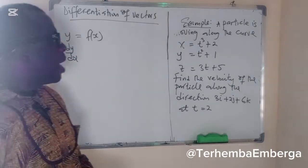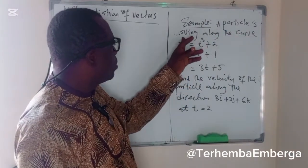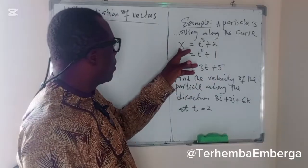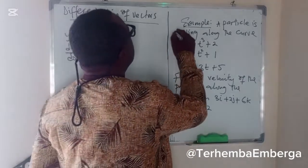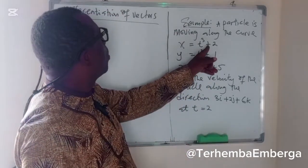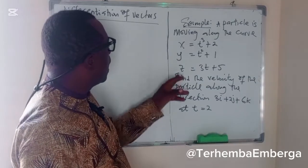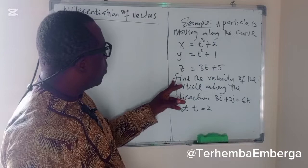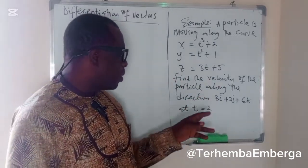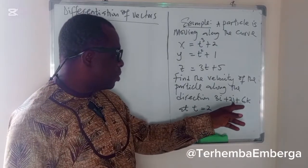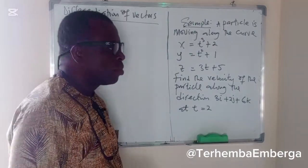But we have a problem here which says a particle is moving along the curve. The x component is x equal to t raised to the power 3 plus 2. The y component is t squared plus 1, and the z component is 3t plus 5. The question here is, find the velocity of the particle along the direction 3i plus 2j plus 6k at t equal to 2.